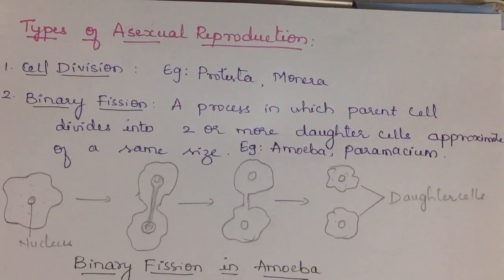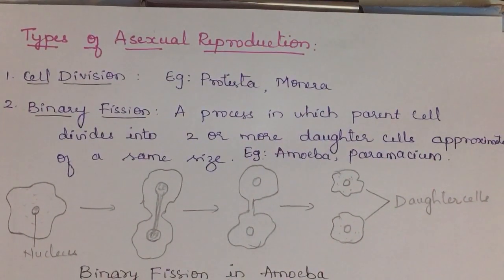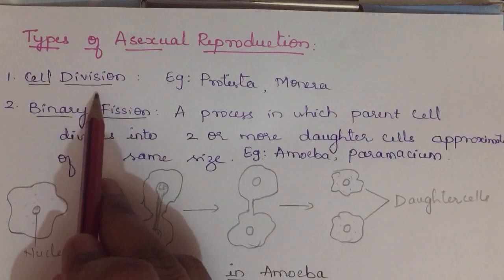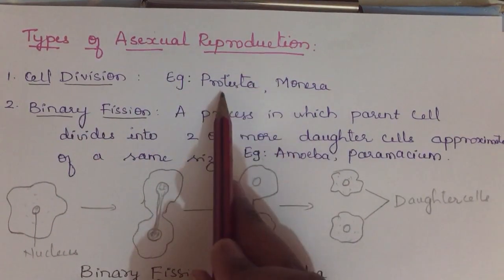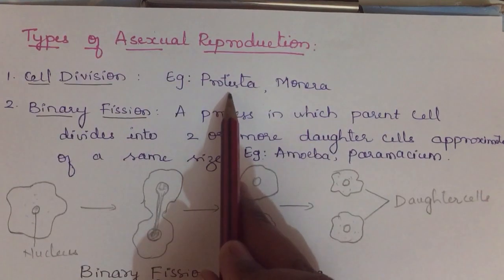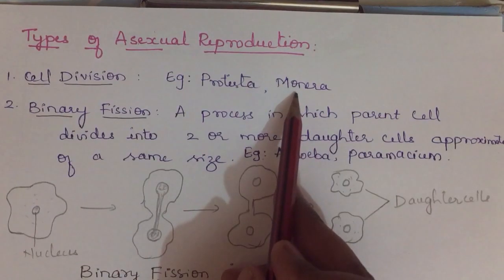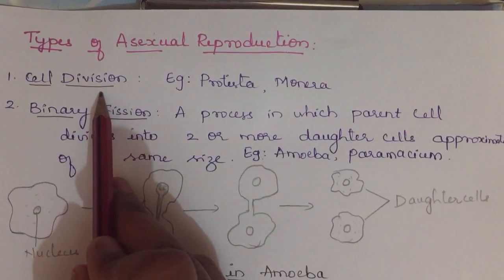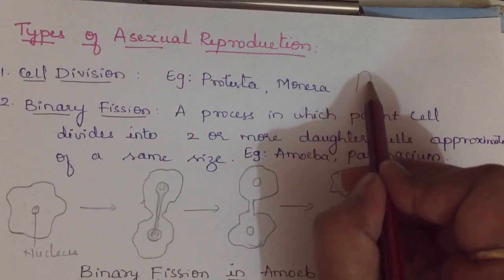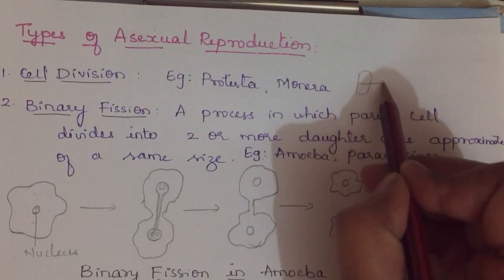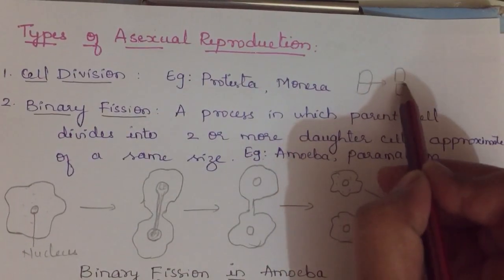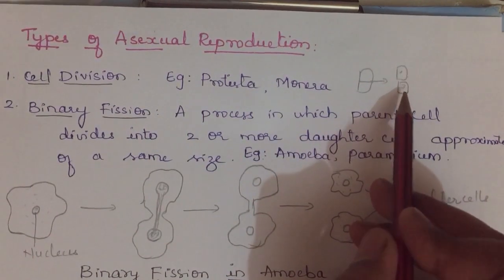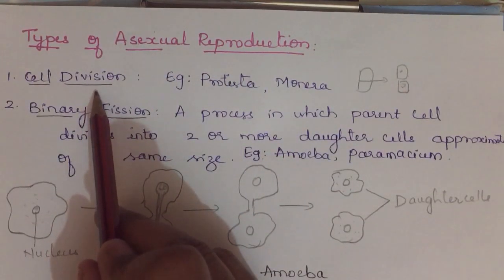The first type of asexual reproduction is cell division, especially in Kingdom Protista and Monera. Protista includes single-cell eukaryotes, and Monera includes only prokaryotes. These organisms divide by simple cell division — for example, bacteria — where the parental cell divides into two daughter organisms or daughter cells.